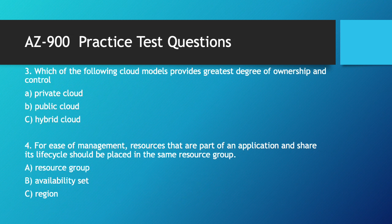Next question: which of the following cloud models provides the greatest degree of ownership and control? The answer is A, private cloud. In the case of private cloud, all the data centers are within the organization's control, giving full control to the organization. B and C are not correct. Public cloud is under the control of the cloud service provider, and hybrid cloud is a combination of private and public cloud. So B and C are not correct.